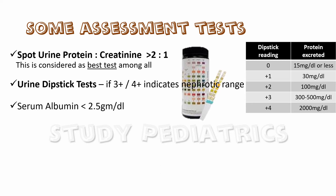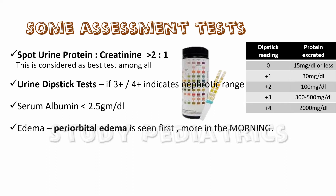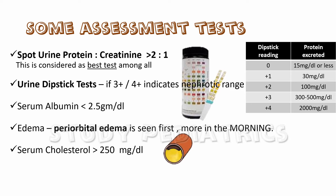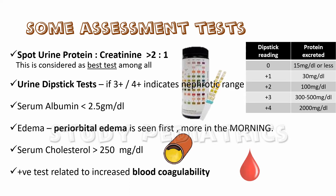Other tests include serum albumin — since hypoalbuminemia occurs, the level decreases below 2.5 gram per dL. Periorbital edema can also be seen, more so in the morning as the patient has been in the lying position for a long time, causing fluid to collect there. As lipoprotein production increases, serum cholesterol level rises above 250 mg per dL. Additionally, anticoagulant factor loss causes a positive test related to increased blood coagulability.